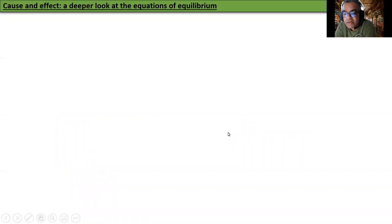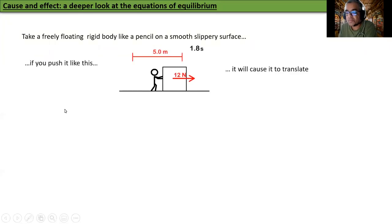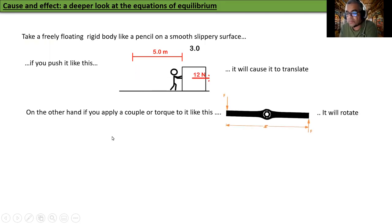Cause and effect: A deeper look at the equations of equilibrium. Take a freely floating rigid body like a pencil on a smooth slippery surface. If you push it like this, it will cause it to translate. On the other hand, if you apply a couple or torque to it like this, it will rotate.